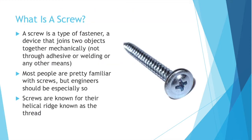So what is a screw? Technically a screw is a type of fastener, a device that joins two objects together mechanically. That just means it's not using an adhesive like glue, or welding things together with heat or electricity or any other means. It's joining things based on its shape mechanically.